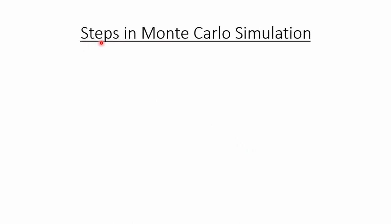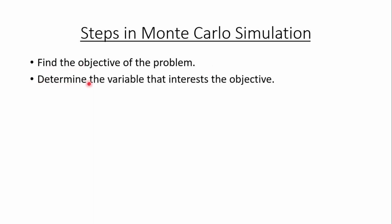First of all let us have a recap of steps in Monte Carlo simulation. The first point is to find the objective of the problem and after finding the objective we need to determine the variable that interests the objective — that means we need to identify the variable that affects our objective. After that we need to determine the probability. In Monte Carlo simulation the probability is either directly given in the problem or we need to calculate it.